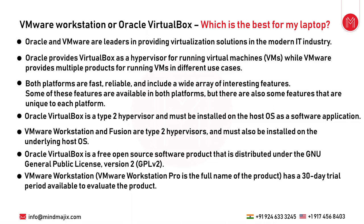Type 1 hypervisors like ESXi install directly on bare metal. Type 2 hypervisors like VMware Workstation or VirtualBox install on top of an operating system such as Windows or Linux. They abstract resources available in the laptop and create virtual machines, getting memory and CPU from the underlying host OS. This is best for students creating and deploying VMs for study, but not suitable for enterprise-level applications — for enterprise, ESXi (Type 1) is required.